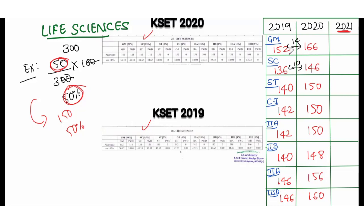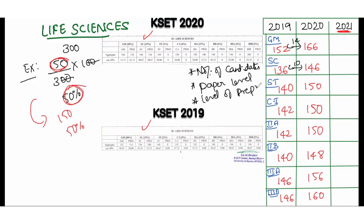That's why we can't predict the cutoff exactly, but we can do an expected analysis. When it comes to the 2021 paper, the cutoff will be released based on criteria such as the number of candidates who appeared, the paper difficulty level — whether easy or moderate — and the level of preparation. Due to lockdown, the preparation level is going to be very high, so that's included in the cutoff analysis. Also, not only your subject — there are 41 subjects in KSET — so all those candidates are also included among the eligible candidates.